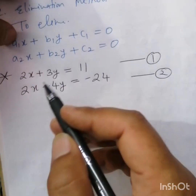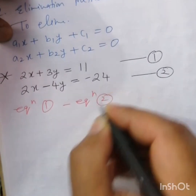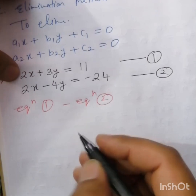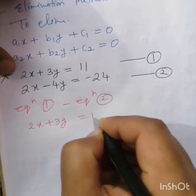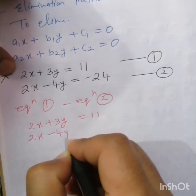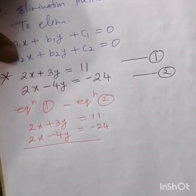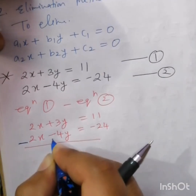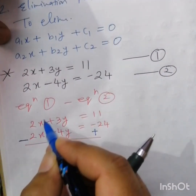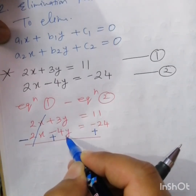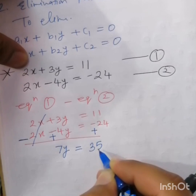The coefficient of x in equation one is 2 and in equation two is also 2, so both are already equal. We can write equation one minus equation two. Subtracting: 2x minus 2x equals 0, and 3y minus minus 4y gives 7y, and 11 minus minus 24 gives 35.